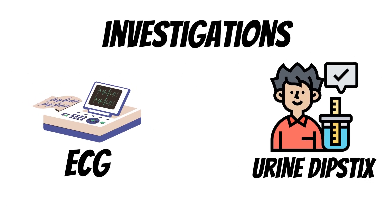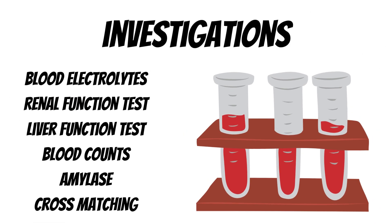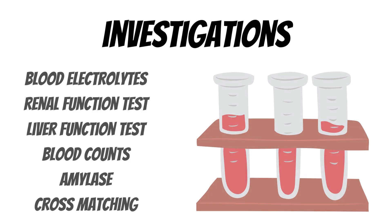Baseline investigations such as ECG and urinary dipstick tests can be done. Blood investigations include renal function test, liver function test, blood counts, amylase to look for pancreatitis, and cross-matching to arrange for blood transfusion.